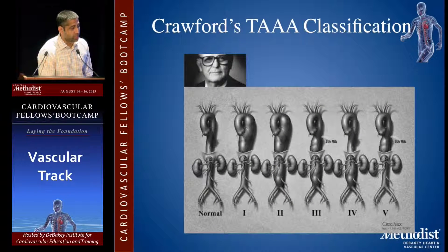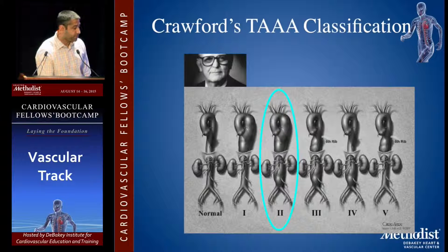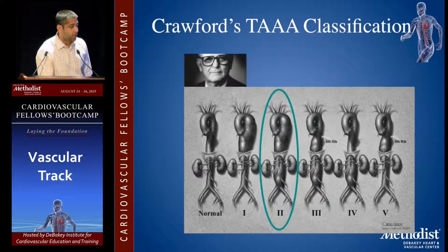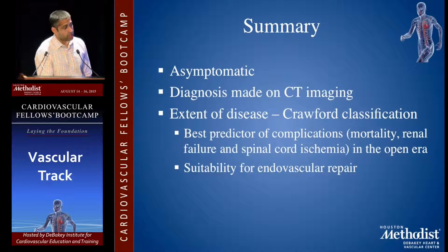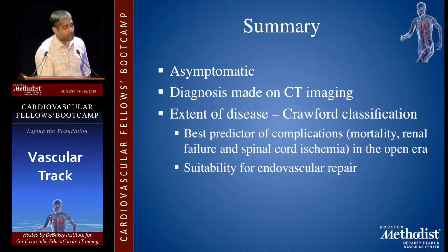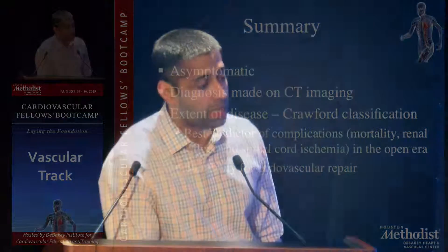The Crawford classification helps determine what the operation needs to be and the extent of the operation. The extent of the aneurysm will also determine how well the patient does in the postoperative period. In summary, most aneurysms are asymptomatic and found incidentally. The Crawford classification is the best predictor of complications and suitability for endovascular repair.